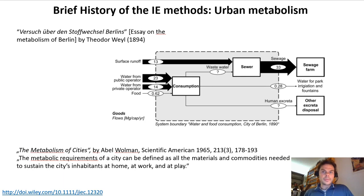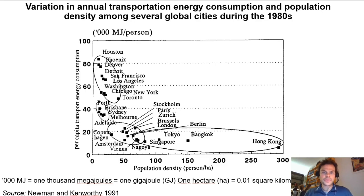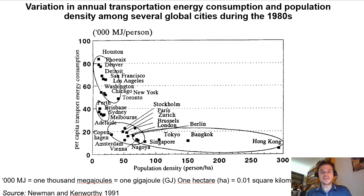The earliest known example of urban metabolism is an essay on the metabolism of Berlin by a physician, Theodor Weil, from 1894. Since then there have been numerous examples, including 'The Metabolism of Cities' by Wolman in 1965, and today urban metabolism studies are applied all across the globe. They can also be used to compare the performance of different cities — for example, showing how population density impacts transport energy consumption: the denser the city, the lower the transport need due to shorter distances and more public transport.